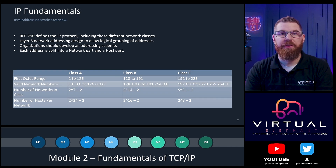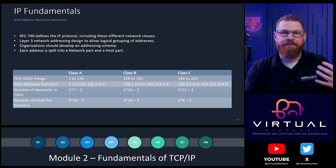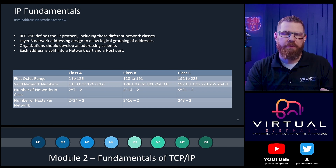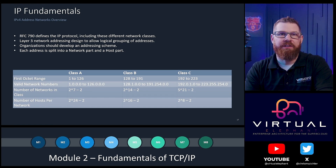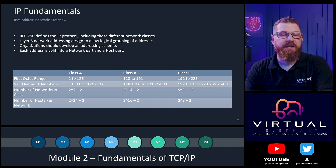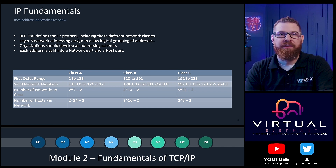As we think of L3, the network layer in the OSI model, this is where IP operates. IP stands for Internet Protocol, and RFC 7090 defined the IP protocol, including a series of classes of networks. Right now we're referring to IPv4, and in a few moments we'll talk about what IPv4 is in more detail, as well as IPv6.